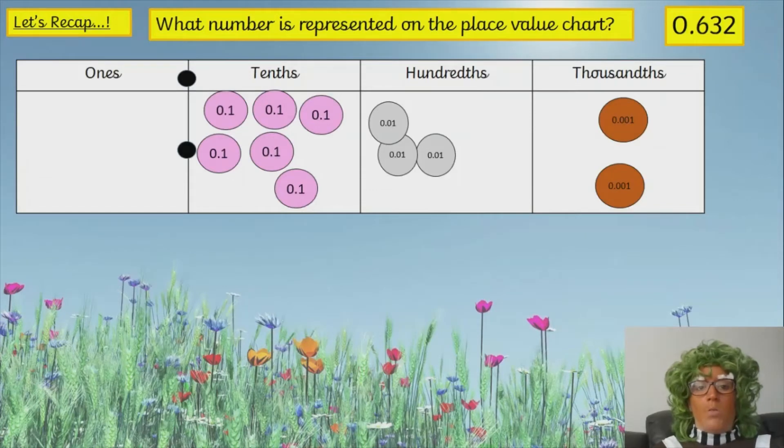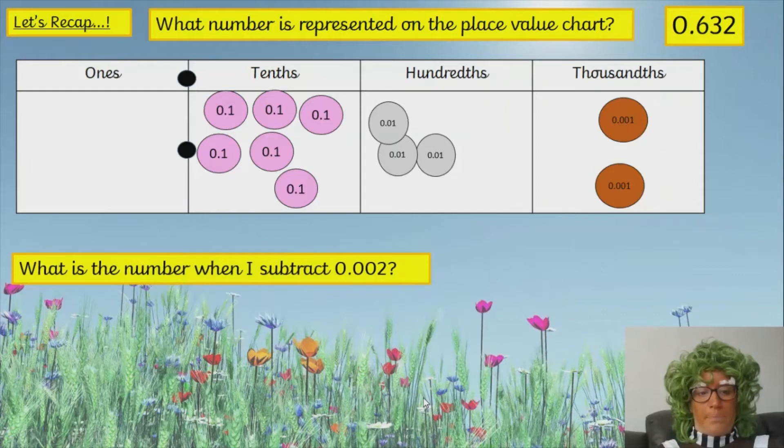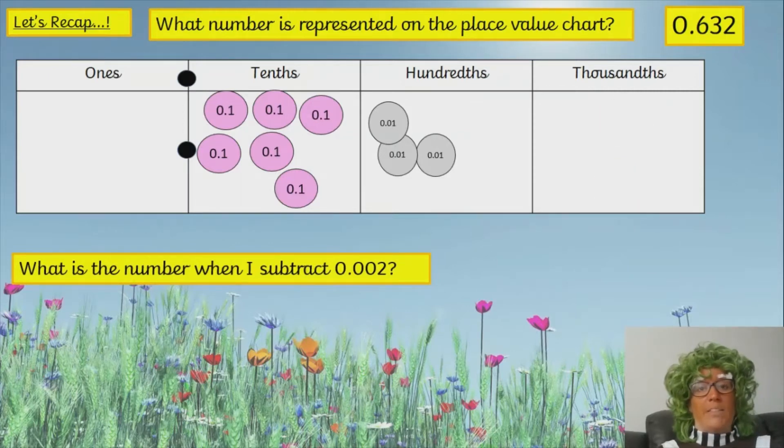Okay. Let's have a quick recap. What number is represented on the place value chart? So, we've got how many ones? Well, I've already given you the answer. So, we've got 0.632. What's the number when I subtract 0.002? So, which of these represent 0.002? It's the thousandths. What's the number going to be when I subtract two of them? And if I subtract two of those, just means I've got none left. So, I've got zero ones. I've got six tenths and three hundredths. So, it's 0.63.